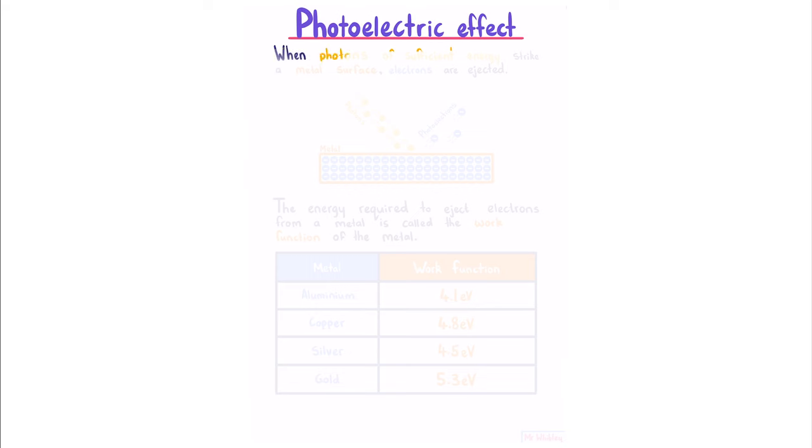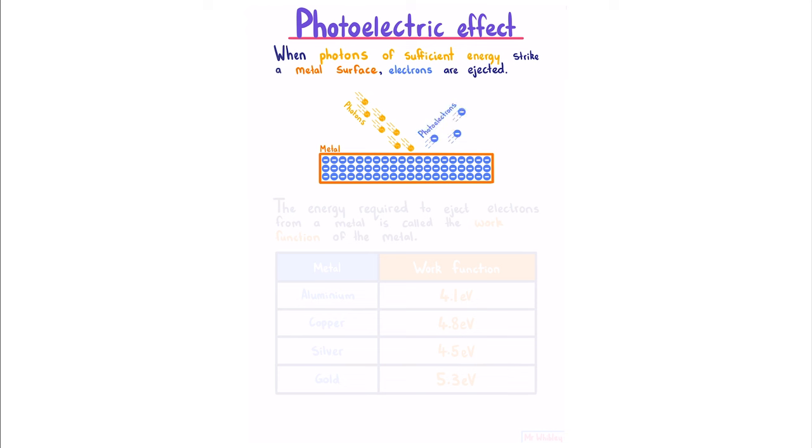Photoelectric effect. When photons of sufficient energy strike a metal surface, electrons are ejected. Here we have our metal surface, our incident photons, and our ejected electrons, or photoelectrons.